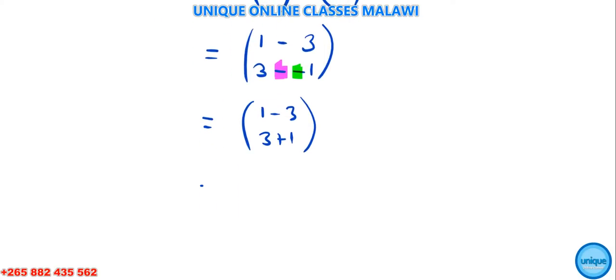We're going to write 1 minus -3, that's 1 plus 3, which is 4. And 3 minus 1, that's 2. Therefore MN equals (-2, 4). That's the answer.